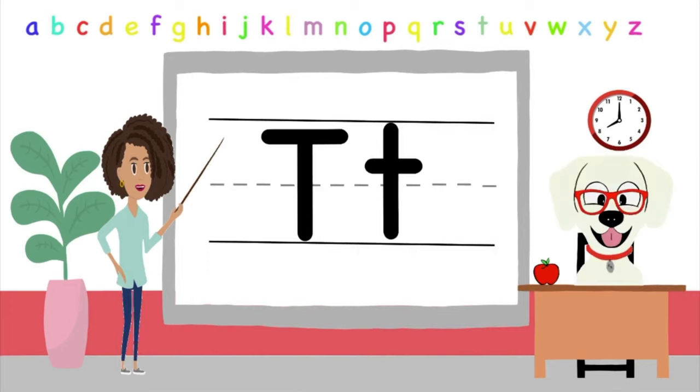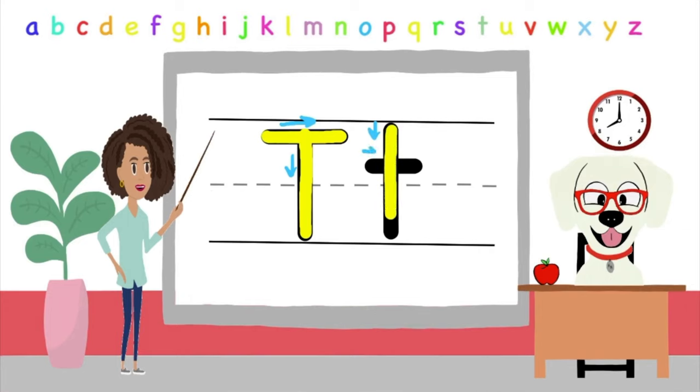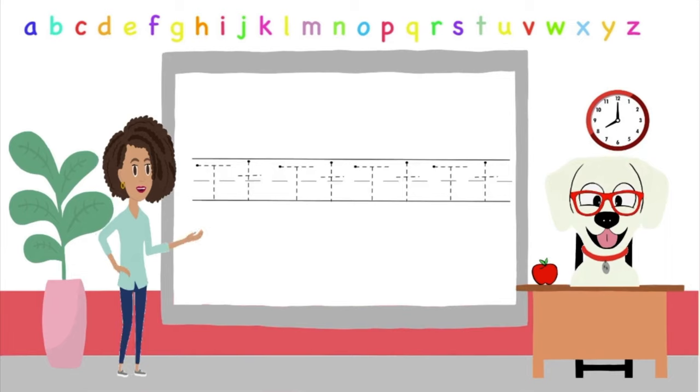Now remember, when we are practicing new sounds we must also learn how to write them. With that being said, let's learn to write the letter T. Here we have the uppercase T and the lowercase T. To write the uppercase T we start at the top and make a straight line to the bottom, then we go back to the top and make a line across. Great job. To make the lowercase T we start at the top and make a line straight down to the bottom, then we go to the middle and make a line across. See, that was easy.